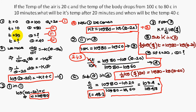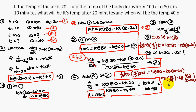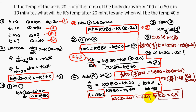Now for the question: if t equal to 20, what is theta? Substituting t equal to 20, we get (1 by 10) times log(4 by 3) times 20 equal to log 80 minus log(theta minus 20). Simplifying gives log(16 by 9) equal to log(80 by (theta minus 20)). After cross multiplication, 16 times (theta minus 20) equal to 720, and simplifying gives theta equal to 65 degrees.